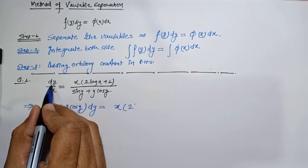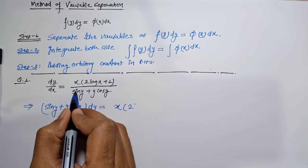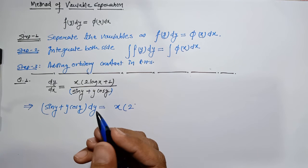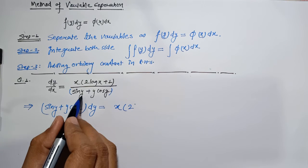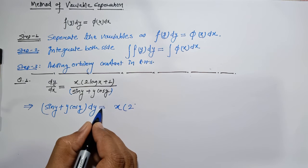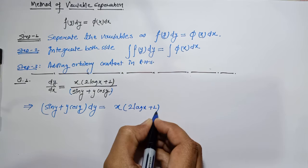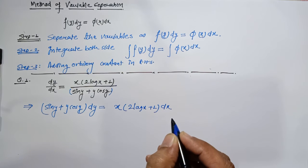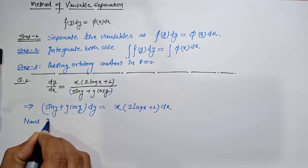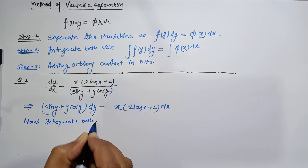Let's take an example. We have to solve dy/dx = x(2 log x + 1) / (sin y + y cos y). We can rewrite this as (sin y + y cos y) dy = x(2 log x + 1) dx. Now we integrate both sides.